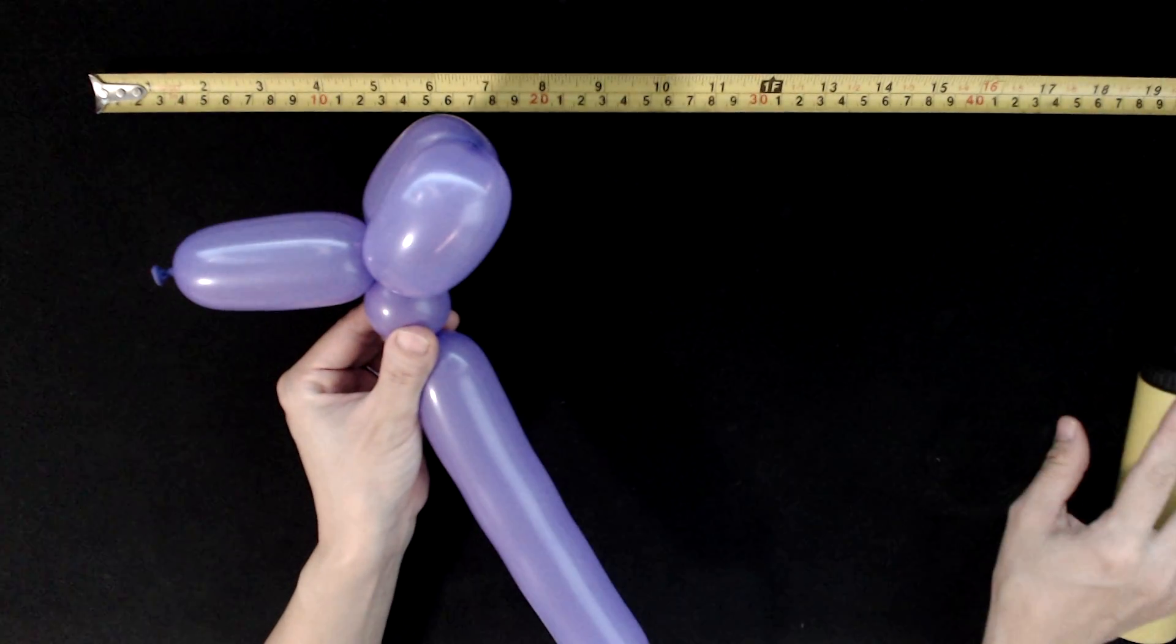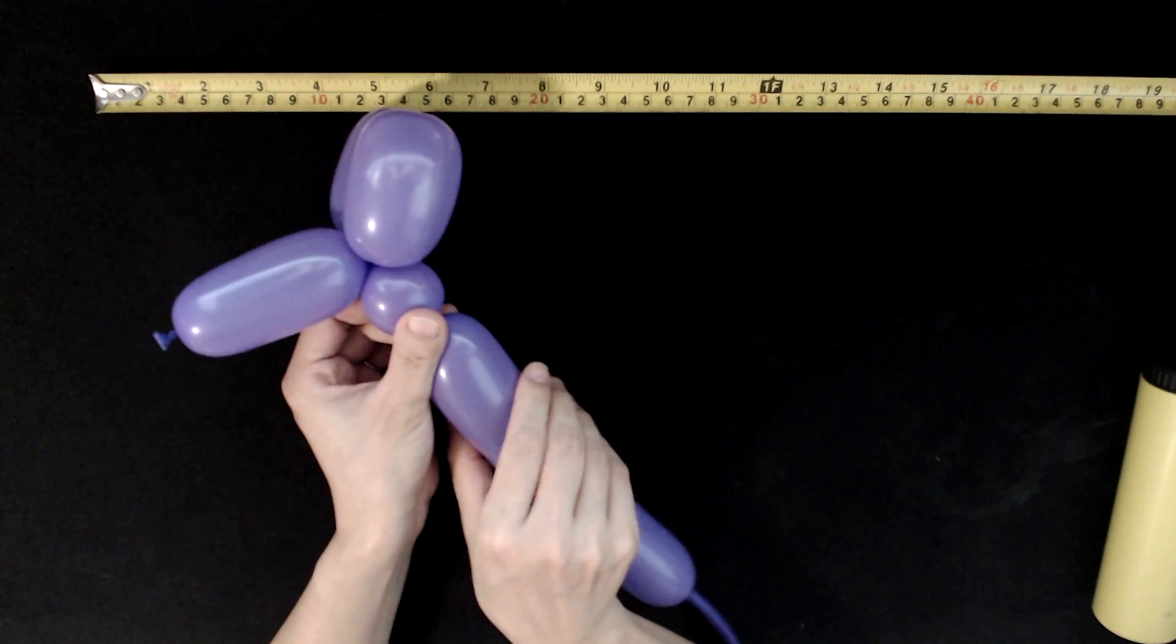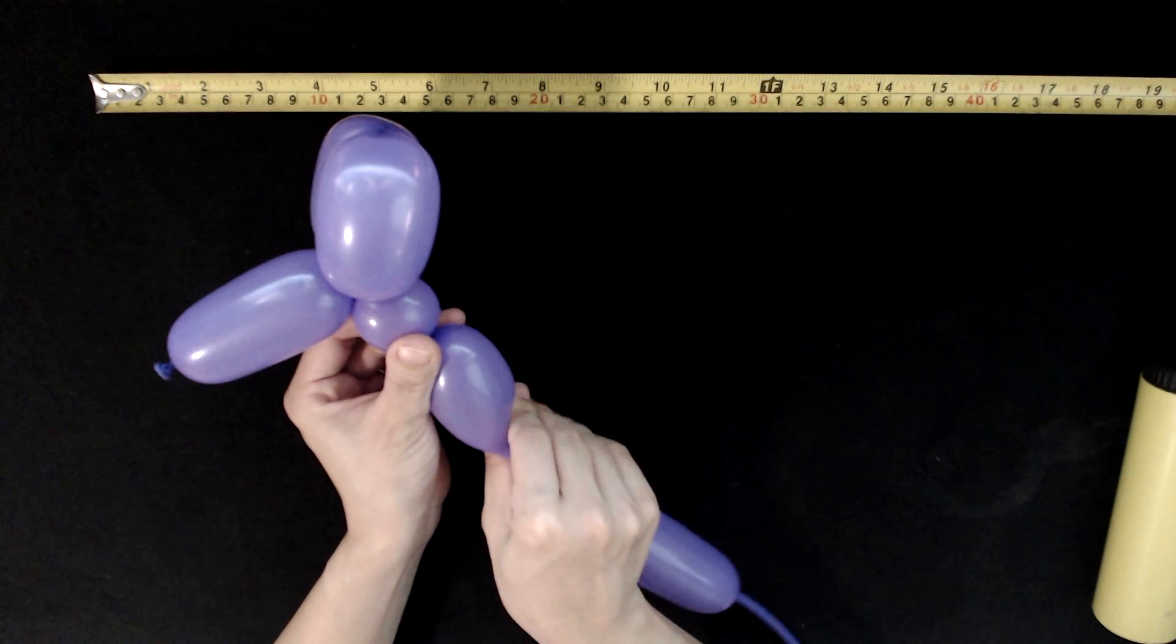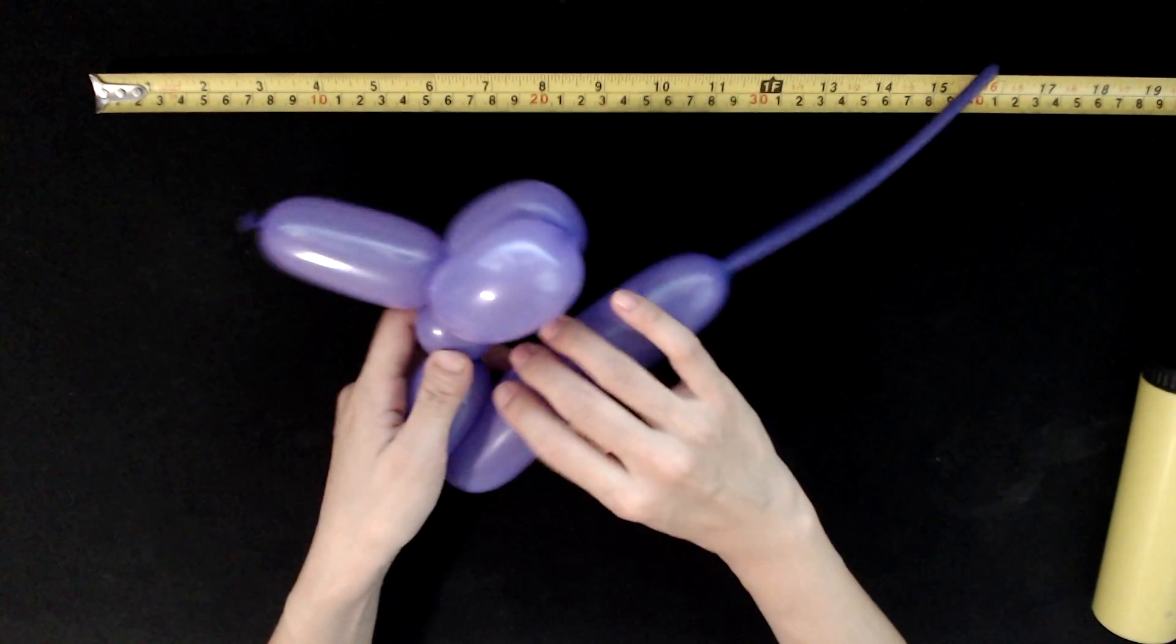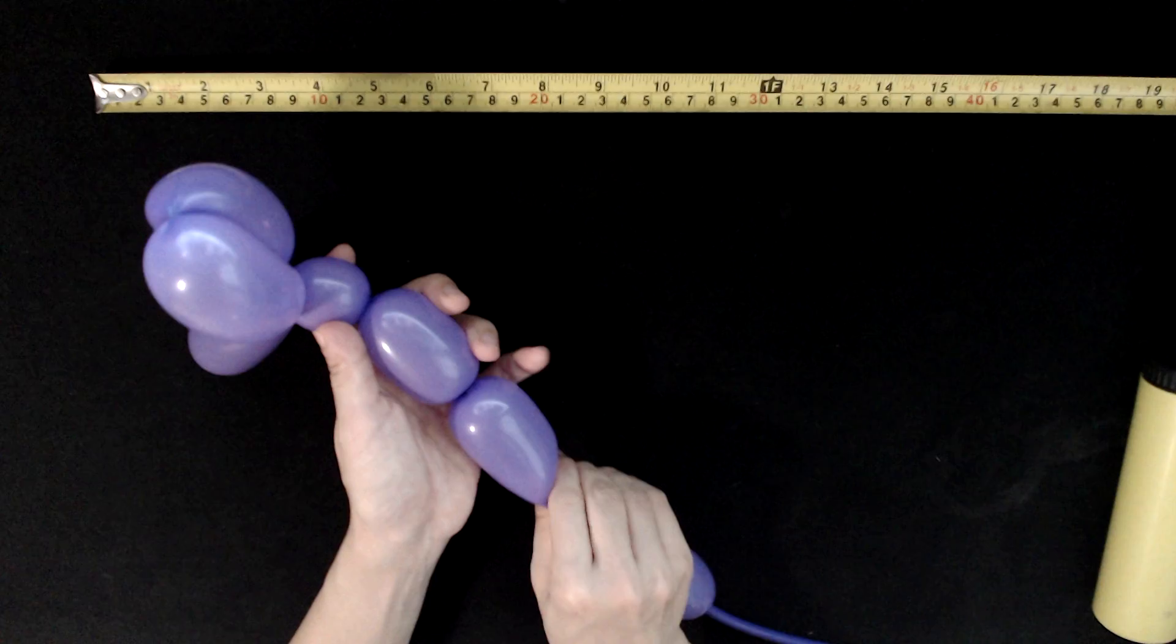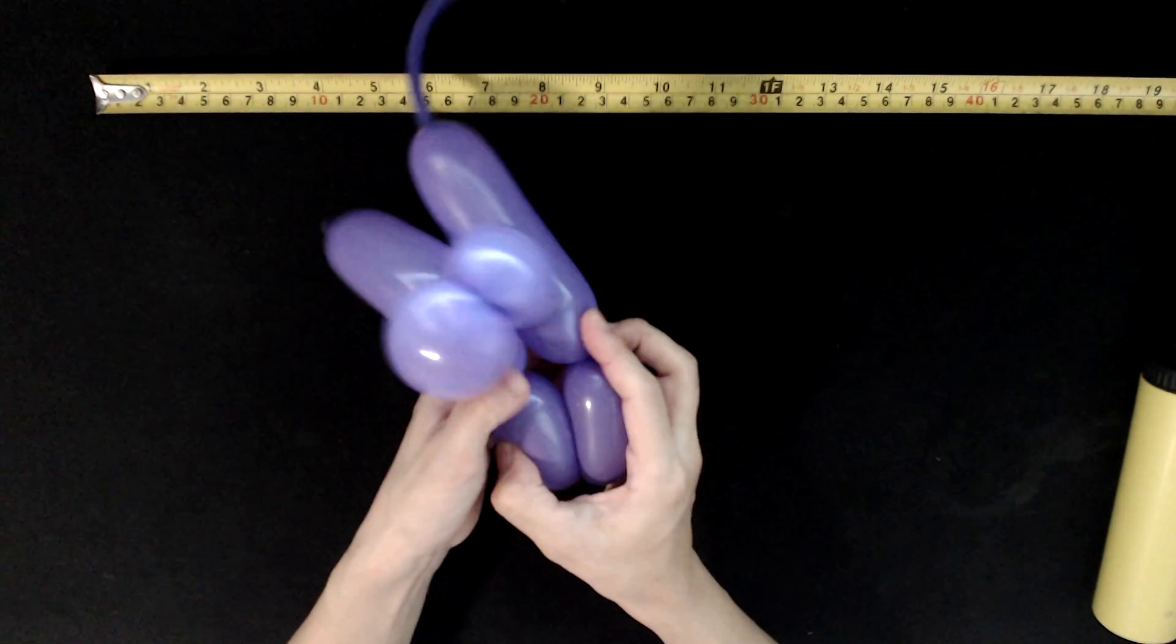And now we're going to make the mouse legs. Make two bubbles and then twist it together.